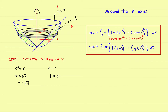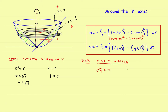Now you need the limits, which means finding where the two functions intersect. You're going to integrate in terms of y, so you need the two y values at the intersection points. The thickness of each washer is dy. Step two is to find the y limits. To do that, set f equal to g: square root of y equals y. Squaring both sides gives y equals y squared, which rearranges to zero equals y squared minus y.